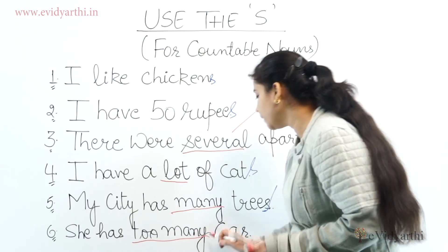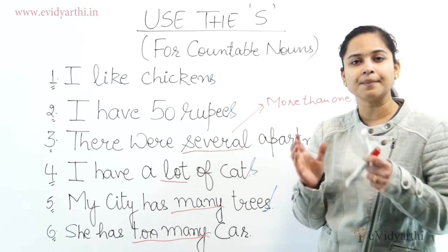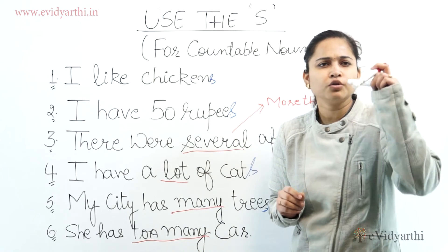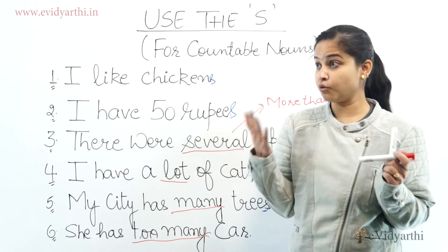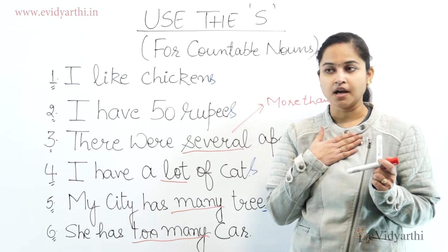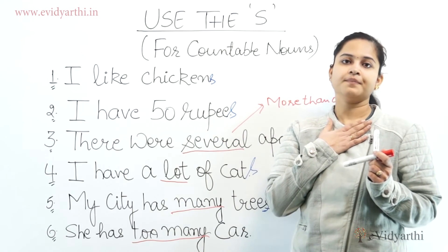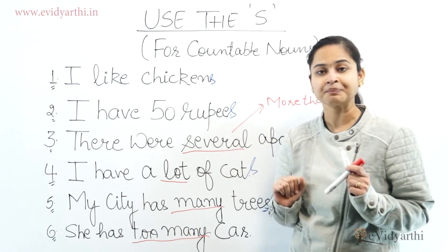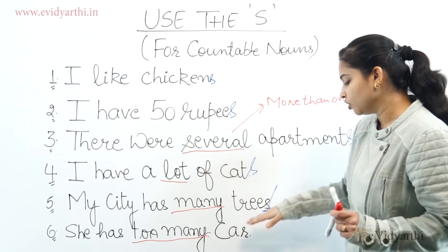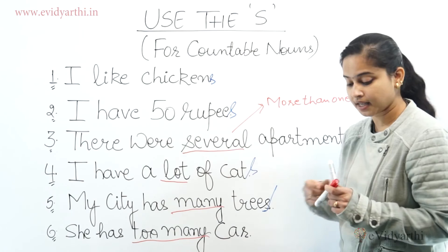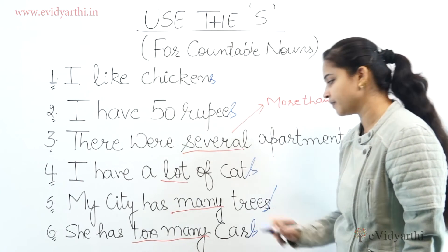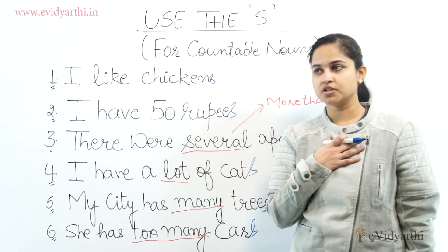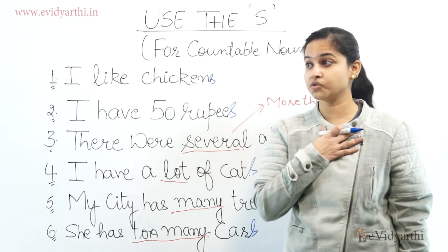'She has too many car' — too many का मतलब क्या होता है? हम too many तब लगाते हैं जब हम किसी चीज़ से अचंबित या surprised हो जाएं। जैसे 'She has too many brothers' — हम surprised हो गए। तो 'She has too many car' गलत है, सही होगा 'She has too many cars'। इसी तरह 'She has too many houses' भी सही होगा।